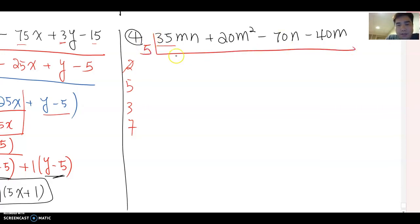Then this becomes 7mn plus 4m² minus 14n minus 8m here. Now do you see another common factor? 7mn and 4m² and 14n and 8m?